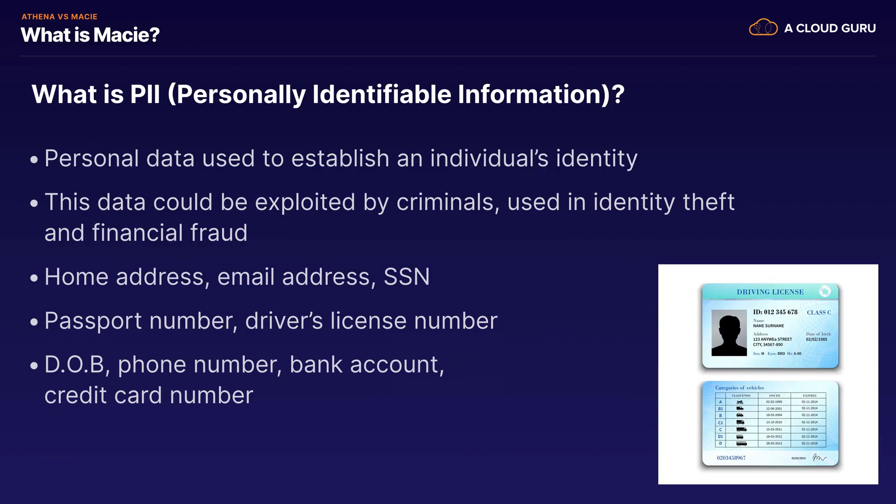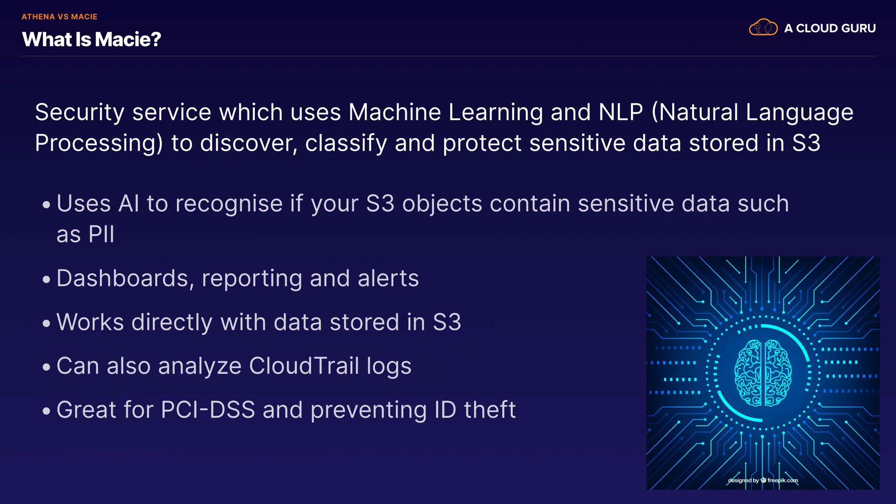Now that we know what Athena is, what is Macie? Let's start with PII. What is PII? PII is personally identifiable information — information used to establish a person's identity. This data could be exploited by criminals and used in identity theft or financial fraud. Examples of PII include your home address, email address, social security number, passport number, driver's license number, credit card numbers, date of birth, phone number, and bank account number.